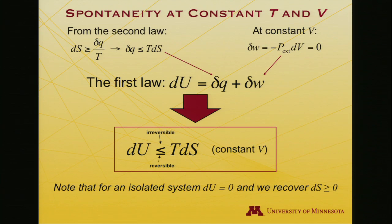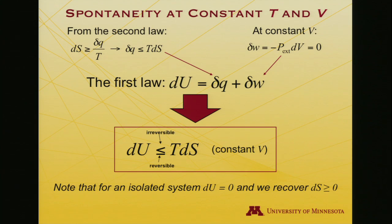At constant volume, the work term vanishes, so we establish that dU is less than or equal to T dS at constant volume. The less-than symbol applies for an irreversible process, since dS will be greater than δQ/T, and the equal symbol applies for a reversible process, where dS equals δQ/T. Of course, if the system is isolated, dU equals zero — constant internal energy — and we recover that dS is greater than or equal to zero, the condition for spontaneity in an isolated system.